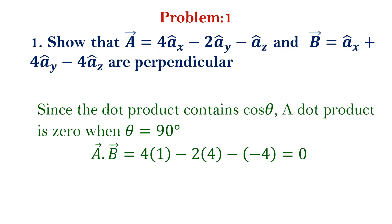Problem number 1. Show that A is equal to 4ax minus 2ay minus az and B is equal to ax plus 4ay minus 4az are perpendicular.